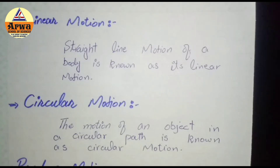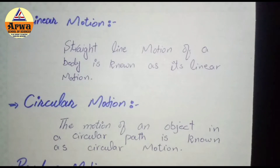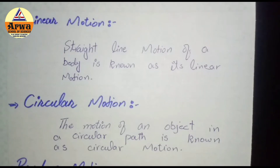Translational motion ko further three types mein divide kiya gaya: linear motion, circular motion, and random motion. First, linear motion: straight line motion of a body is known as its linear motion. Translational motion mein ek body line mein move karti hai — wo line straight bhi ho sakti hai ya curve bhi ho sakti hai.